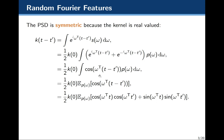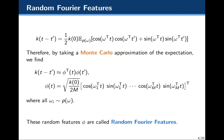Since P(w) is a density, we rewrite this in terms of an expectation. Using a trigonometric identity, we can write this in terms of cosines and sines. We've written our kernel as an expectation over a spectral density, and since we have our kernel as an expectation, we can use a Monte Carlo approximation of this kernel.